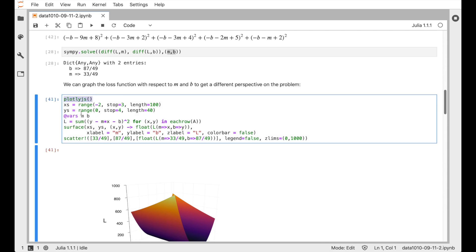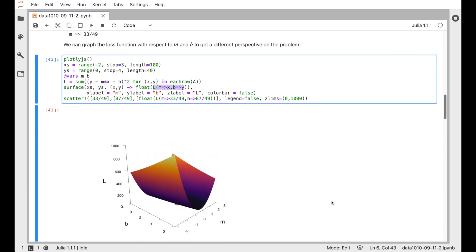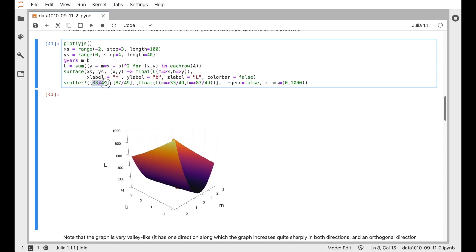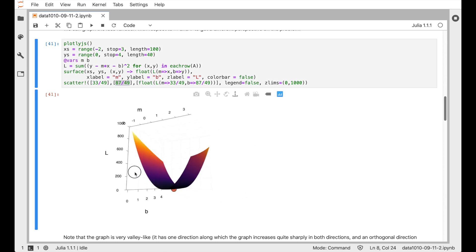So let's take a look at that. I've used this PlotlyJS, it's called Backend, for the plots function because I want to be able to manipulate the graph. But we declare our ranges for M and B, and then we plot L as a function of M and B. So we're just looking at how bad, so the z-axis here, the values on the z-axis are indicating how bad the fit is for a particular M and B combination. And I've plotted here the point 33 over 49 and 87 over 49, which is the place where there's a minimum.